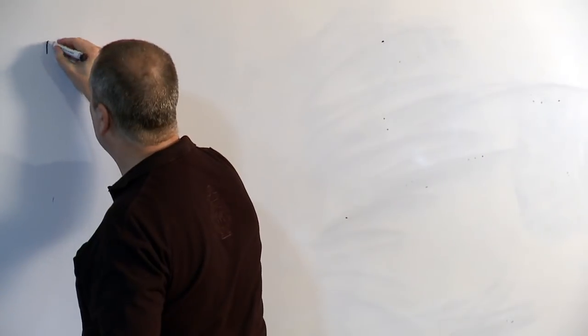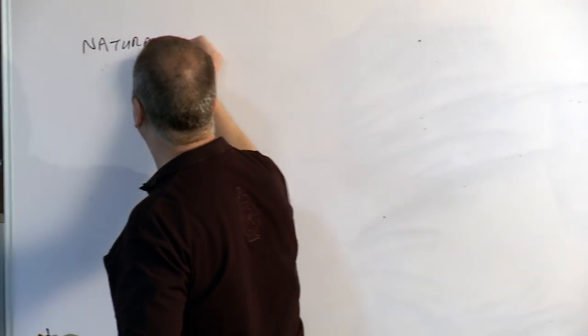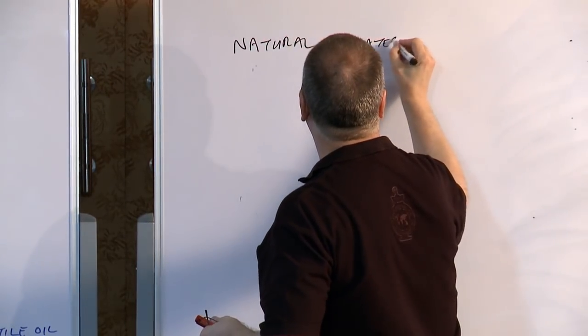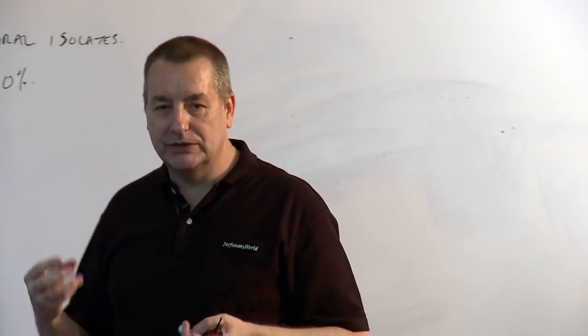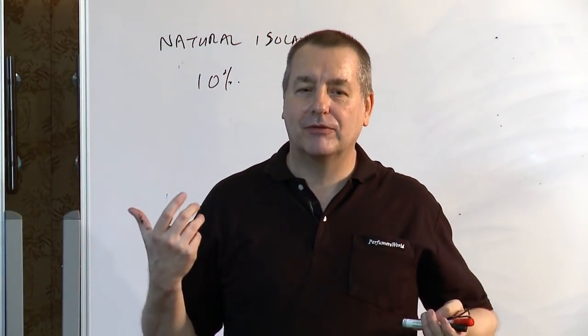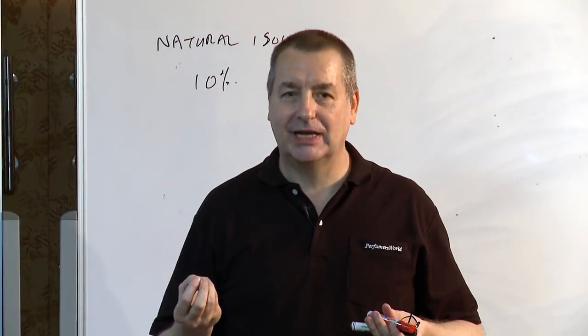Now natural isolates, it's difficult to say how many percent, but probably something in the region of 10% in a perfume. But for example, in a cheap dishwashing liquid perfume, we might use D-limonene. D-limonene would come from what? Citrus. From citrus oils. First discovered in lemon. Limon, and the E-N means terpene, terpene found. It could be 80% of the formula. So, for natural isolates.